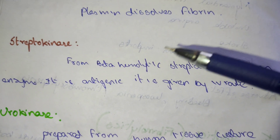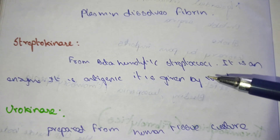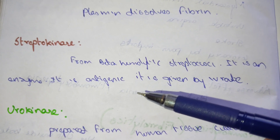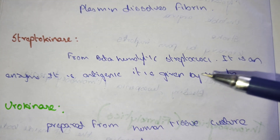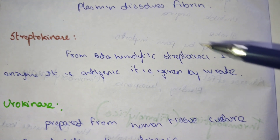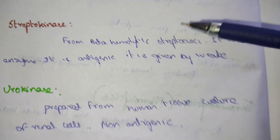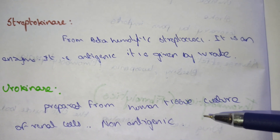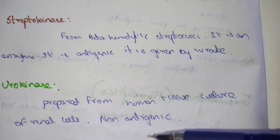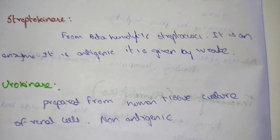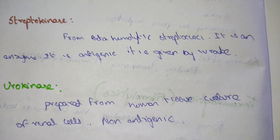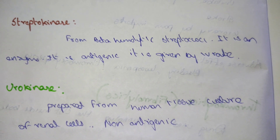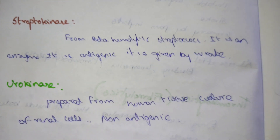Streptokinase is derived from beta-hemolytic streptococci. It is an enzyme and it is antigenic, given by IV route. Urokinase is prepared from human tissue culture of renal cells and it is non-antigenic. Thank you — for more videos please like, share, and subscribe to my YouTube channel.